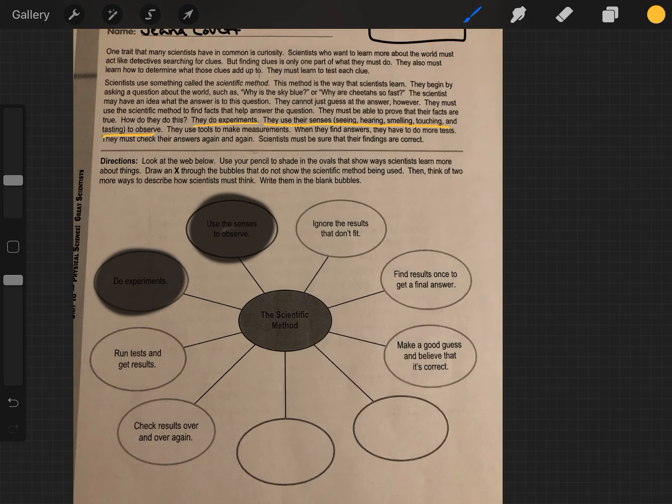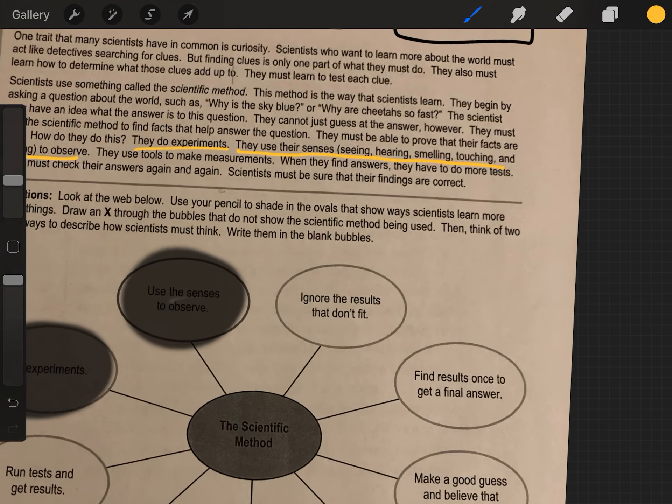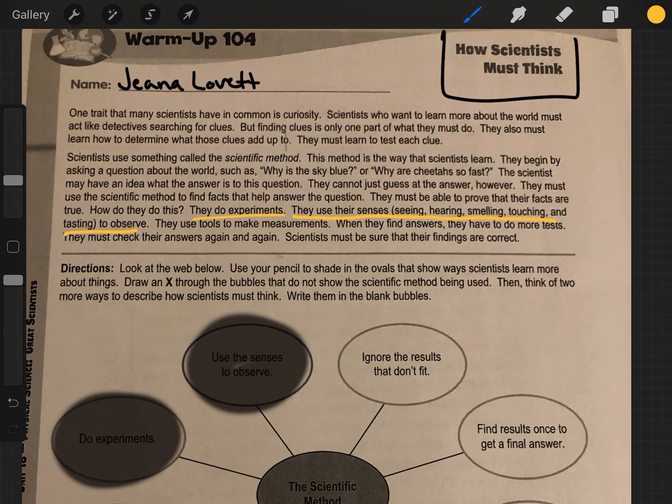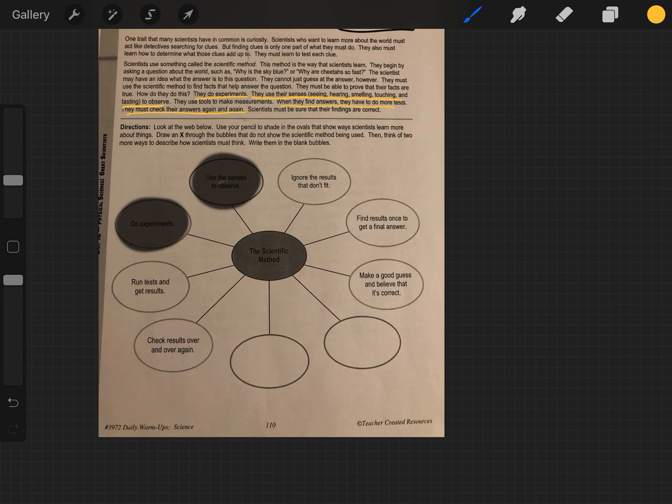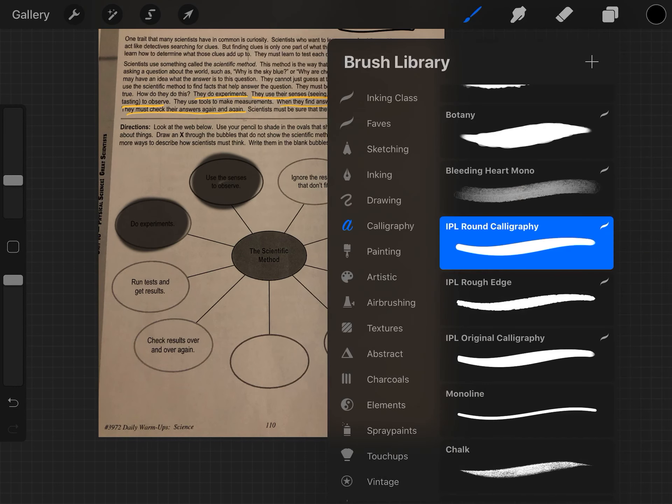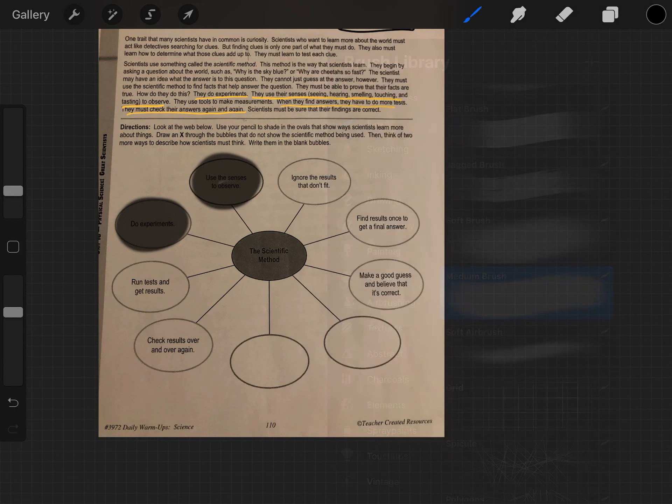They run tests and get results. Okay, they use tools to make measurements. Yes, I'm trying to find the exact sentence, but we know this one is true. When they find answers, they have to do more tests. They must check their answers again and again. So they are collecting data and running tests to get results. So that one we can shade in.